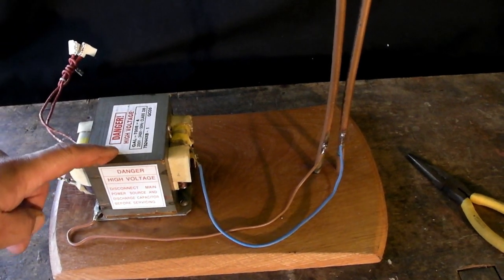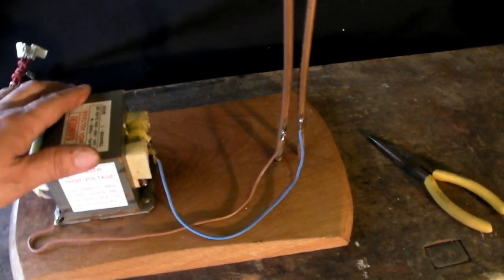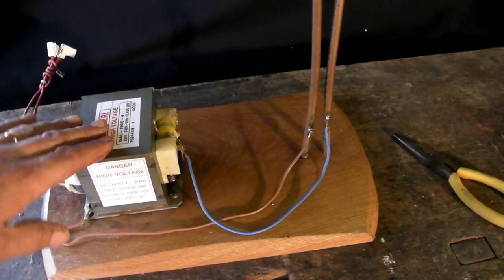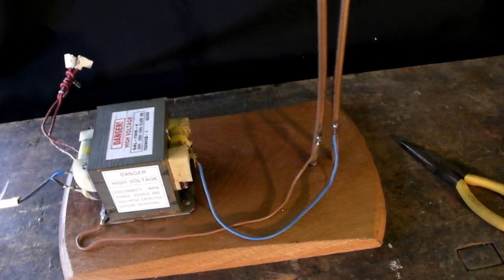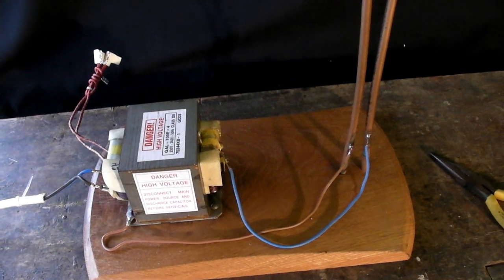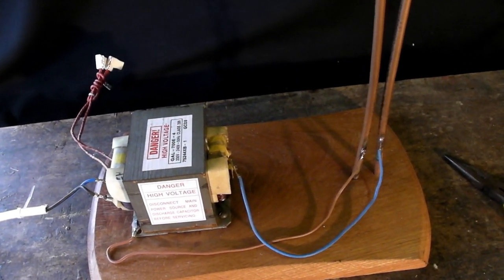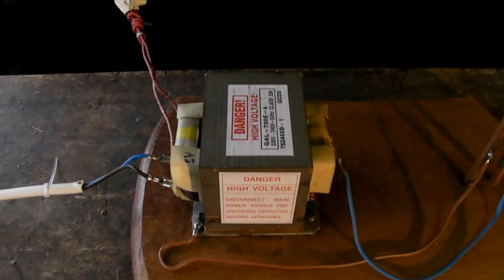Now this is the main part of our Jacob's ladder. This is the transformer from out of the microwave which is used to power the magnetron which is the thing inside the microwave that actually produces the microwave radiation itself. But how does a transformer work? I hear you ask. What does it actually do?